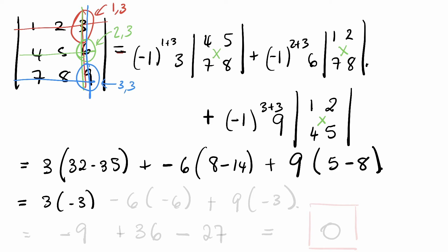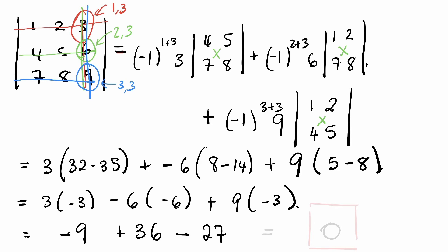This gives us 3 × (−3) − 6 × (−6) + 9 × (−3), which is −9 + 36 − 27 = 0. That's our answer.